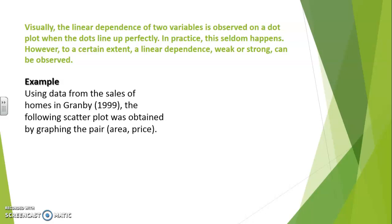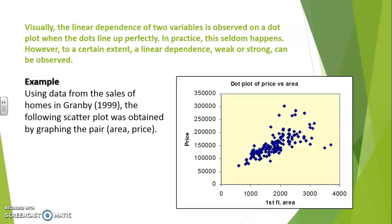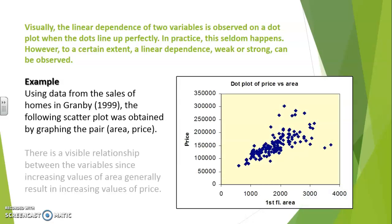Here is an example showing data obtained from the sales of homes in Granby, expressed in terms of the area of the house and the price of the house. In the scatter plot, there is a visible relationship between the variables, since typically increasing values of area lead to an increase in values of price. Of course, this is not a functional dependence since the alignment is clearly not perfect.